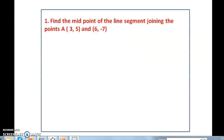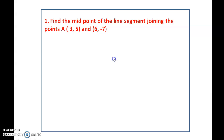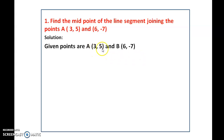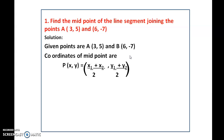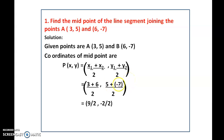Now let us solve a problem. Find the midpoint of a line segment joining A(3, 5) and B(6, -7). The given points are x1 = 3, y1 = 5 and x2 = 6, y2 = -7. The coordinates of the midpoint are ((x1 + x2)/2, (y1 + y2)/2) = ((3 + 6)/2, (5 + (-7))/2) = (9/2, -2/2) = (9/2, -1). So the midpoint of the line segment is (9/2, -1).